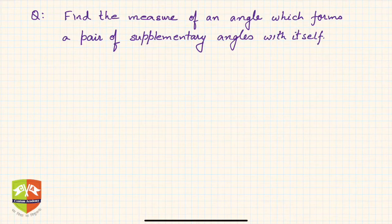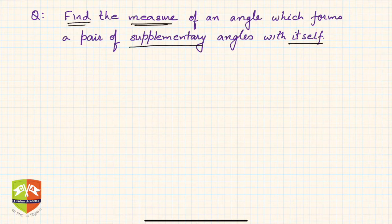All right friends, having seen the theory part, now it's time to solve some problems because this is the only way you learn mathematics. Let's start. First question says find the measure of an angle which forms a pair of supplementary angles with itself. So you have to find the measure of an angle.